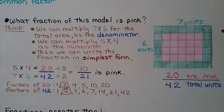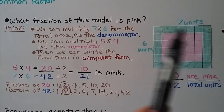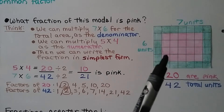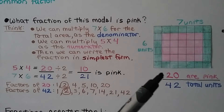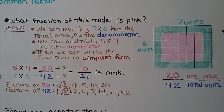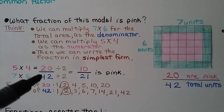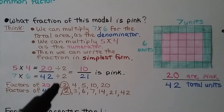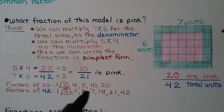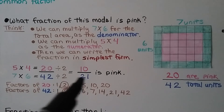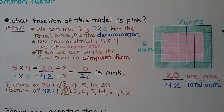Take a look at this model. What fraction of this model is pink? The model has 7 units across and 6 units down, so we multiply 7 times 6 for the total area as the denominator — that's 42. The pink section is 5 across and 4 down, so 5 times 4 equals 20 as the numerator. We know 20 forty-seconds of the model is pink. We list the factors of 20 and 42: their greatest common factor is 2. 20 divided by 2 is 10, and 42 divided by 2 is 21. So 10 twenty-firsts of the model is pink, written in simplest form.